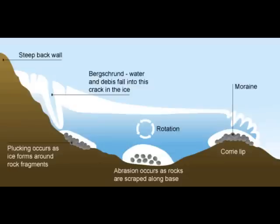Distinct landforms can occur as a result of erosion. One of these is a corrie. Corries form when snowflakes collect in a hollow and compress, becoming glacier ice. Erosion and weathering gradually make the hollow bigger. These are often the starting point of a glacier.